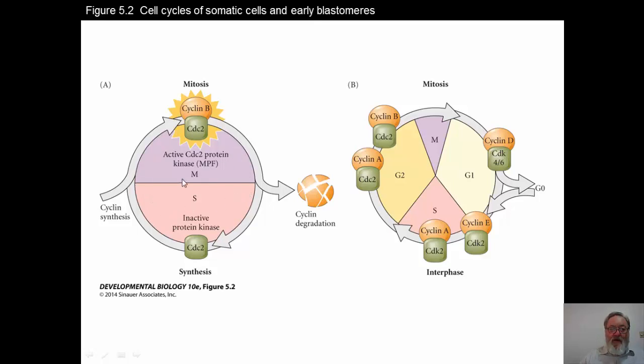And so, in the case of Drosophila, you're getting this cycle taking place every 10 minutes. In the frog, it's a little bit longer than that. But clearly, you're able to have very rapid cell divisions.